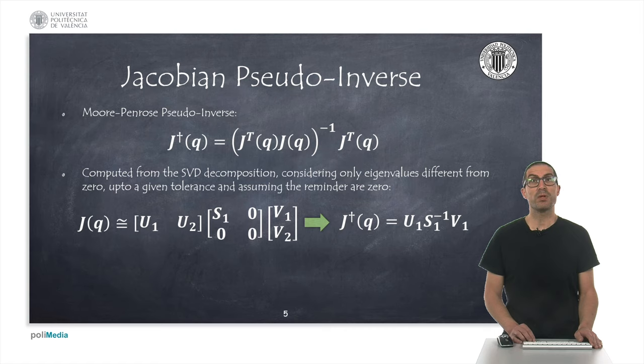In that case, the pseudo-inverse matrix can be computed from the SVD decomposition of the Jacobian matrix, and to avoid some numerical problems of the Moore-Penrose expression, we can force to zero some of the eigenvalues for a given tolerance, and compute the pseudo-inverse matrix from the indicated expression on the right.